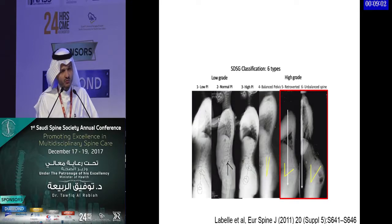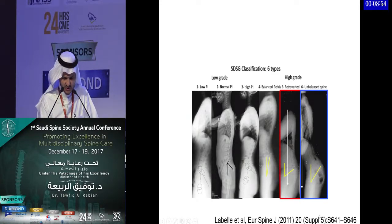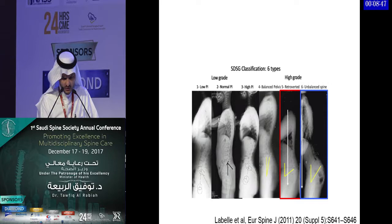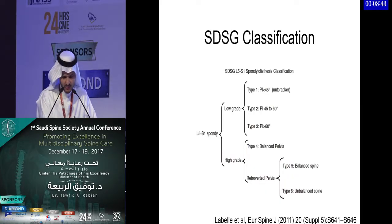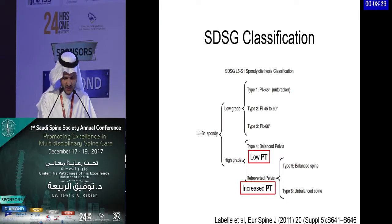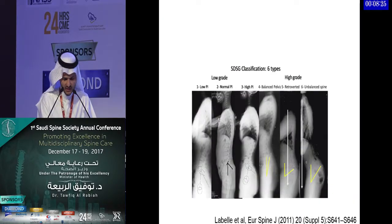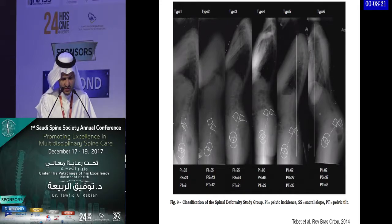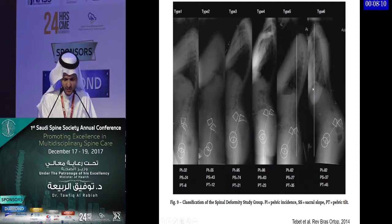There is a subgroup, alluded to in the adult group, of those with an unbalanced spine — where the plumb line is anterior to the femoral heads. So the current classification divides into low-grade and high-grade; high-grade into balanced pelvis with low pelvic tilt, and retroverted pelvis with increased pelvic tilt; and these are further classified into balanced spine and unbalanced spine. Going from left to right in this classification, pelvic incidence increases, pelvic tilt increases, and in type 6 there is an unbalanced spine.